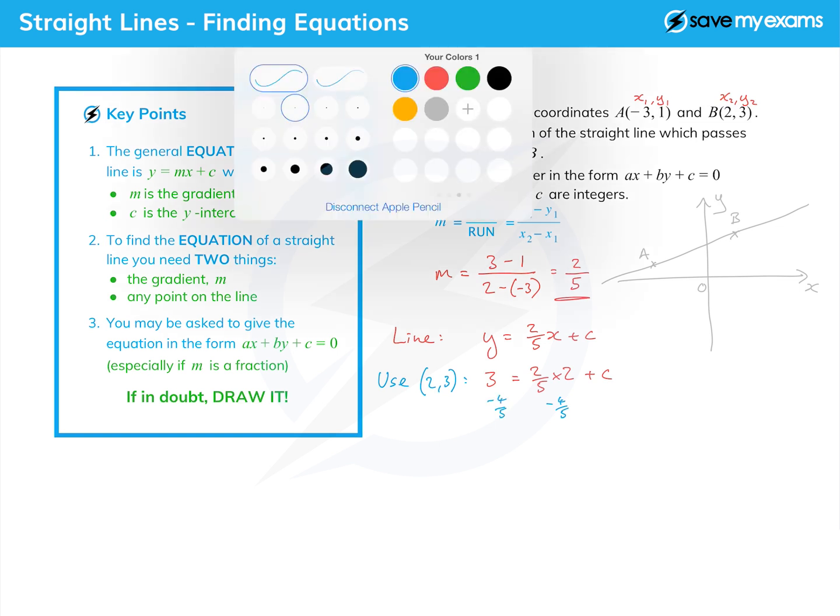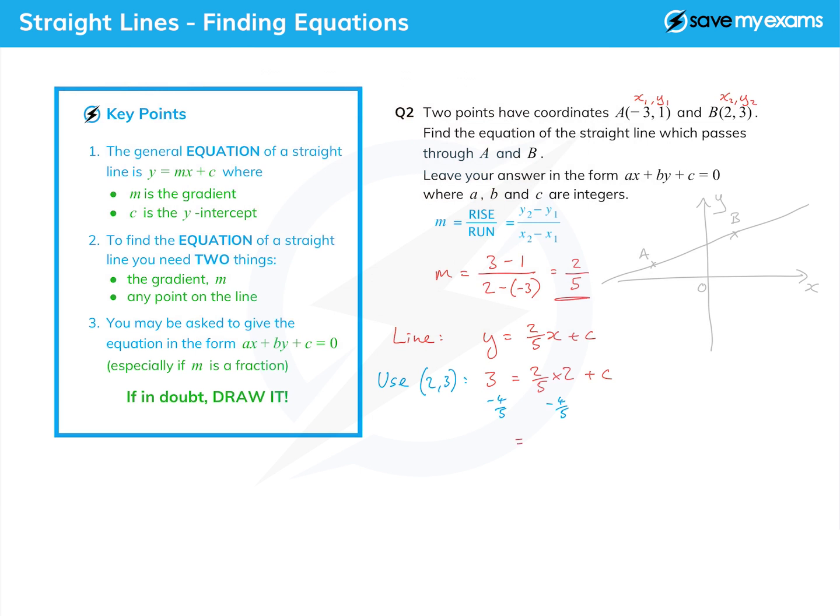And at this point I'm going to do it all in fractions, so I'm going to say, well, 3 is fifteen fifths, and we're subtracting four fifths, and so c is, well, fifteen minus four is eleven, and it's in fifths. And so my line has equation y equals two fifths x plus eleven fifths.